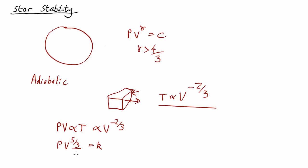So gamma is five-thirds, which is more than four-thirds, so the Sun is stable. Good to know.